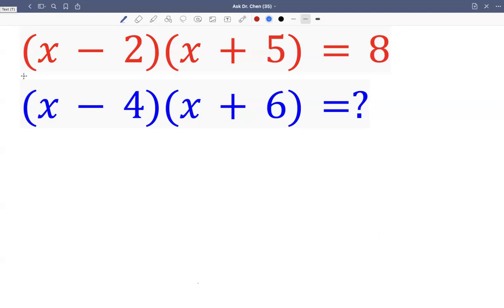So given the first equation, x minus two times x plus five equals eight. Out of this equation, we can solve for x and then plug x into the second equation. Okay, let's solve the first one.